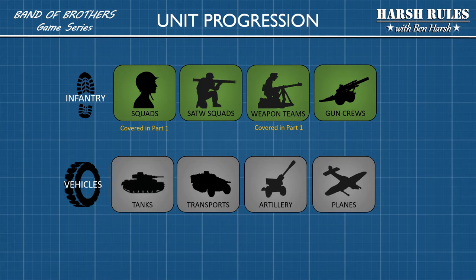All the units in Bob are basically split into two groups. There are infantry and vehicles. Infantry are non-mechanized units composed of squads, SATW squads, weapon teams, and gun crews. Vehicles are composed of tanks and other forms of armor, transports, off-board artillery, and planes, which are more support units.